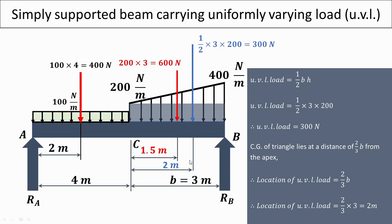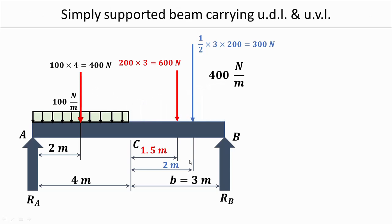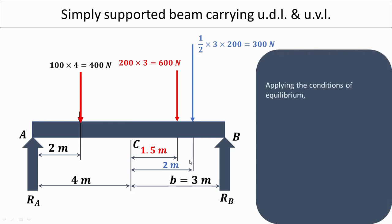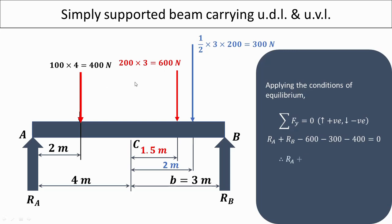All loads have been converted to point loads. Now we apply the conditions of equilibrium to find the beam reactions. Summation of forces in the Y direction equals zero, with upward forces positive. So Ra plus Rb minus 600 minus 300 minus 400 equals zero, giving Ra plus Rb equals 1300 Newton.